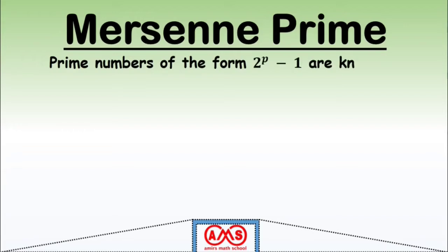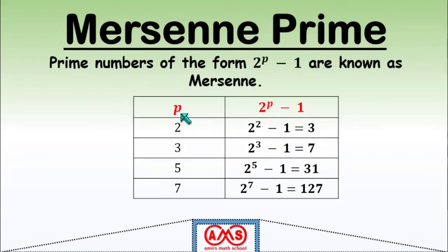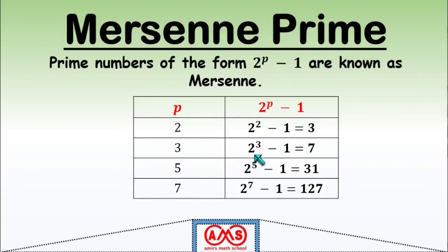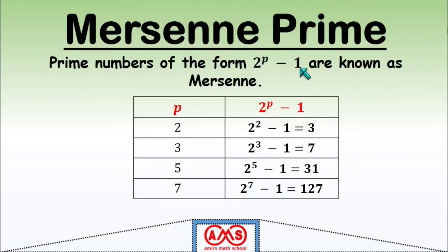Now let's see the theorem about Mersenne primes. Prime numbers of the form 2^p − 1 are known as Mersenne primes. For any value of p, if 2^p − 1 is a prime number, that number is called a Mersenne prime. For example: p = 2 gives 3 (prime, Mersenne prime); p = 3 gives 7 (Mersenne prime); p = 5 gives 31 (Mersenne prime); and p = 7 gives 127 (Mersenne prime).